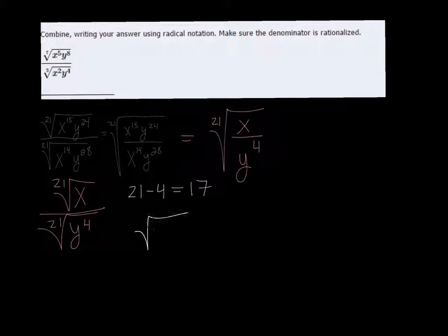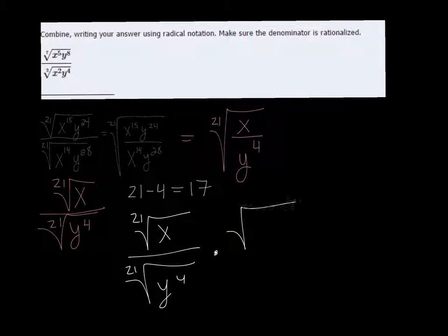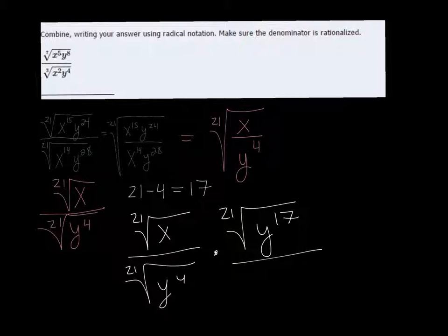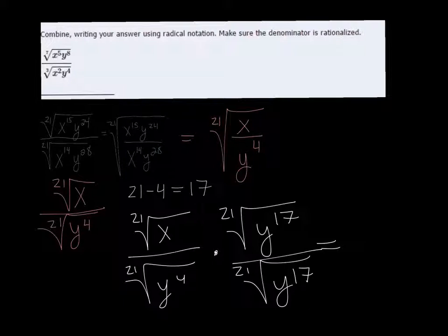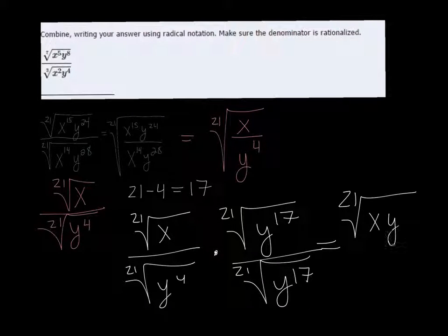So we have the 21st root of x over the 21st root of y to the 4th. So what I need to do is multiply by the 21st root of y to the 17th on the top and the bottom. And I'm allowed to do that because it's just multiplying by 1, but in a different way. So in the top I get the 21st root of x, y to the 17th.